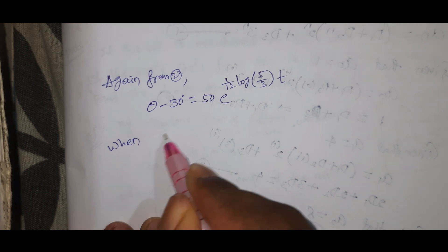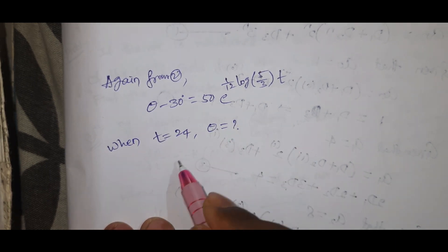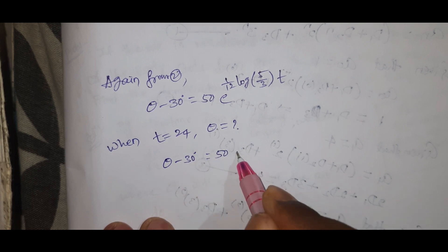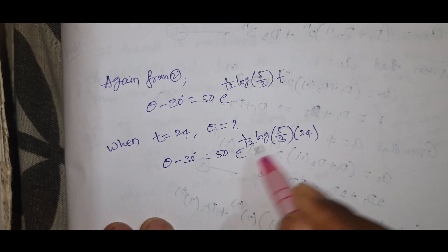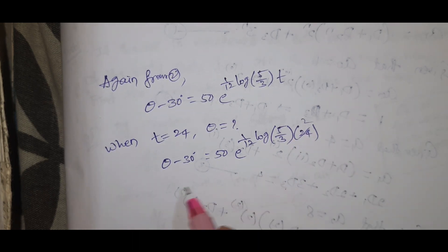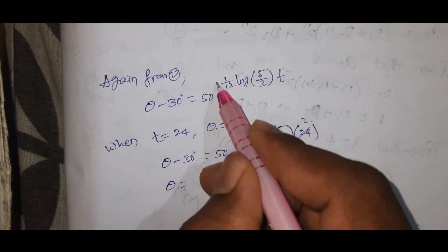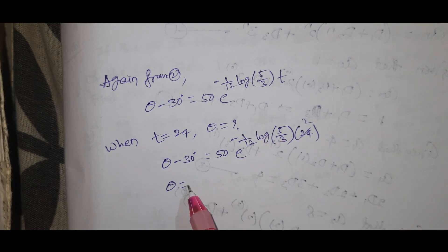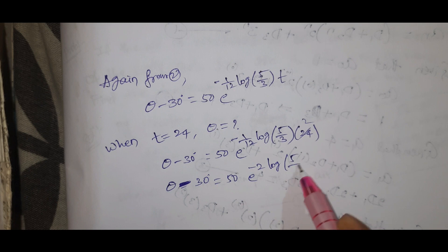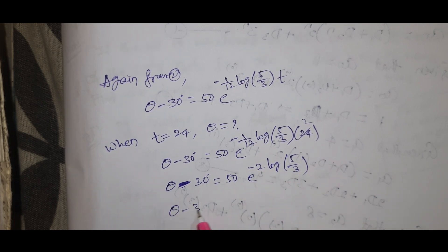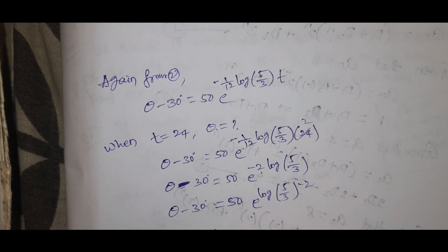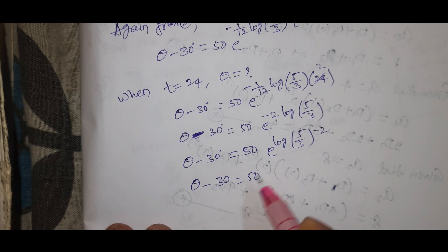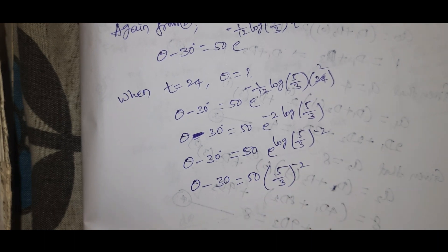Now when t equal to 24, theta equal to question mark. Substituting: theta minus 30 equal to 50 into e power minus k times 24. This becomes theta minus 30 equal to 50 into e power minus 2 log of 5 by 3, which equals 50 into e power log of 5 by 3 to the power of minus 2. The log cancels out, giving theta minus 30 equal to 50 into 5 by 3 whole to the power of minus 2.